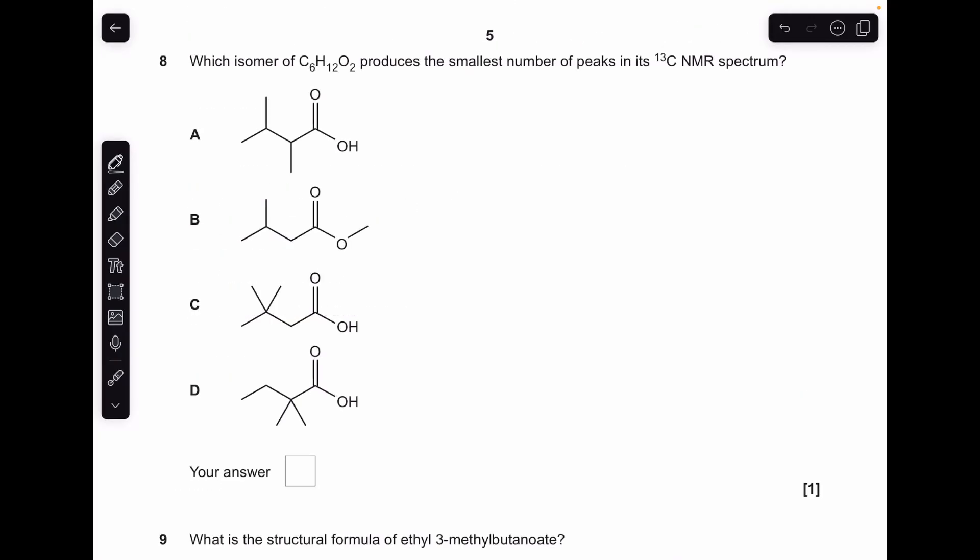Number eight, we've just got to work out how many different carbon environments we've got in each of these. So A, they're equivalent, so that's one. That's obviously on its own. As is that. As is that. As is that. So we've got five in that one.